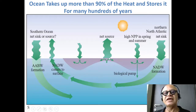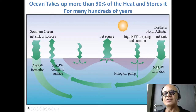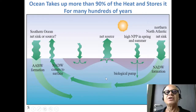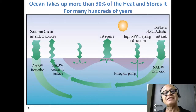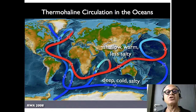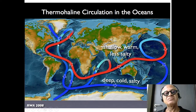The ocean is a net source of CO2 in some places, and there are places where it is taking down CO2. Overall, the ocean takes up roughly twenty-five percent of carbon emissions, which is critical because, with both the heat and the carbon that it absorbs, it modulates global warming greatly.